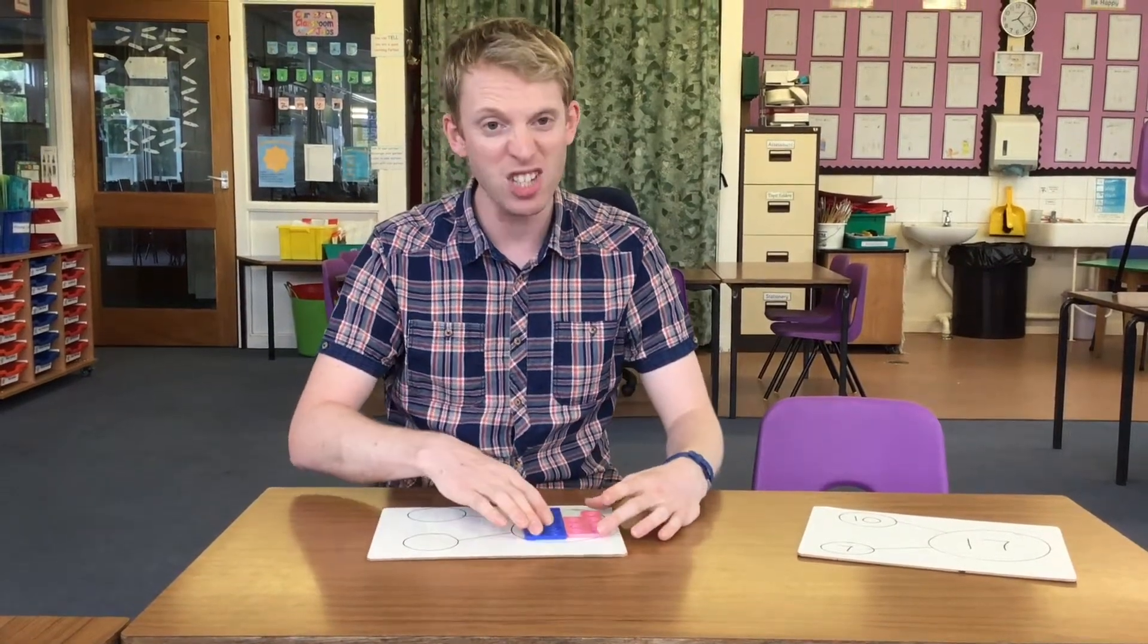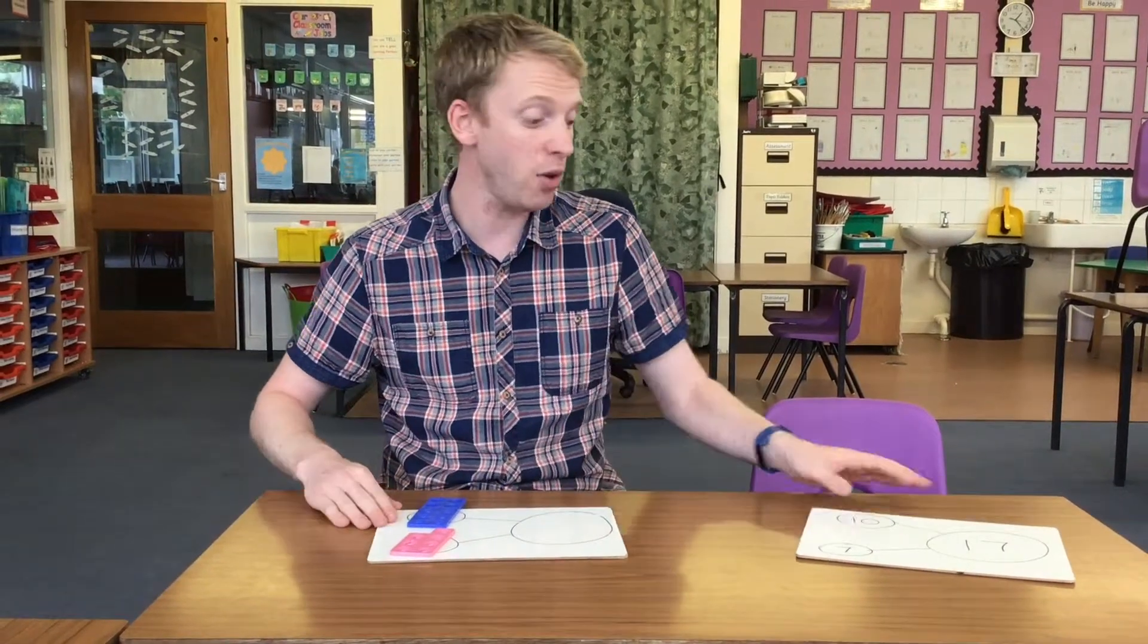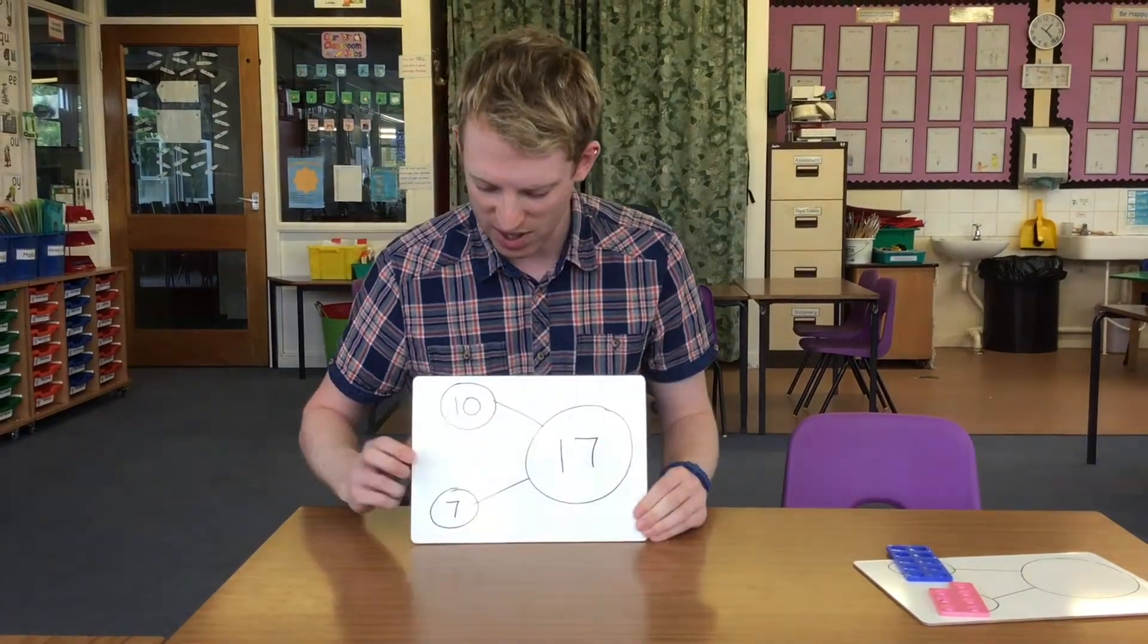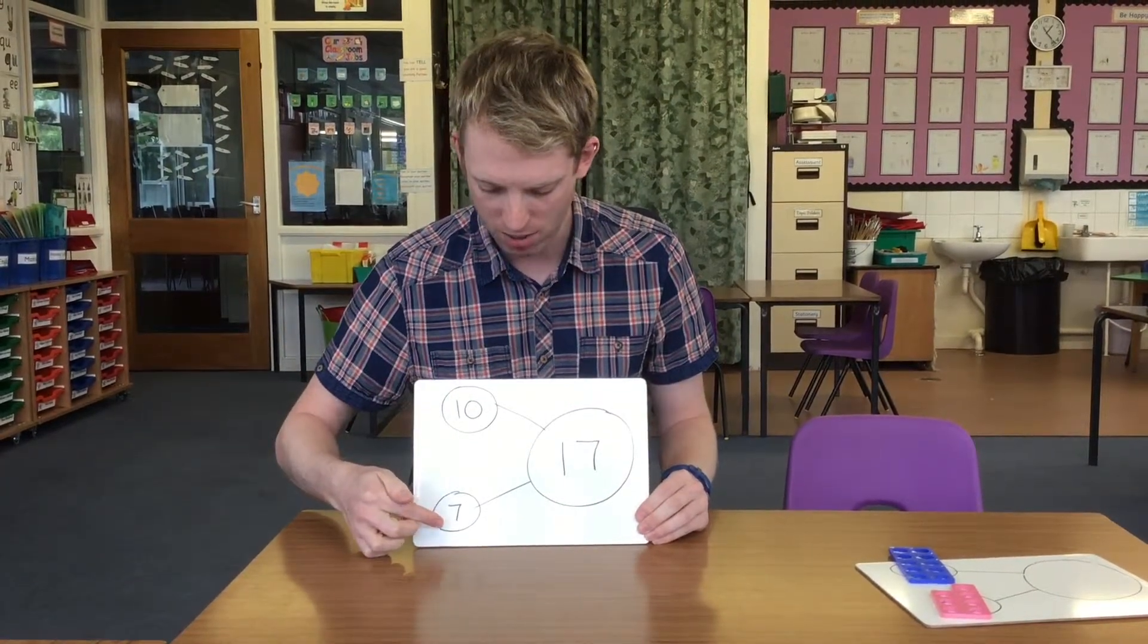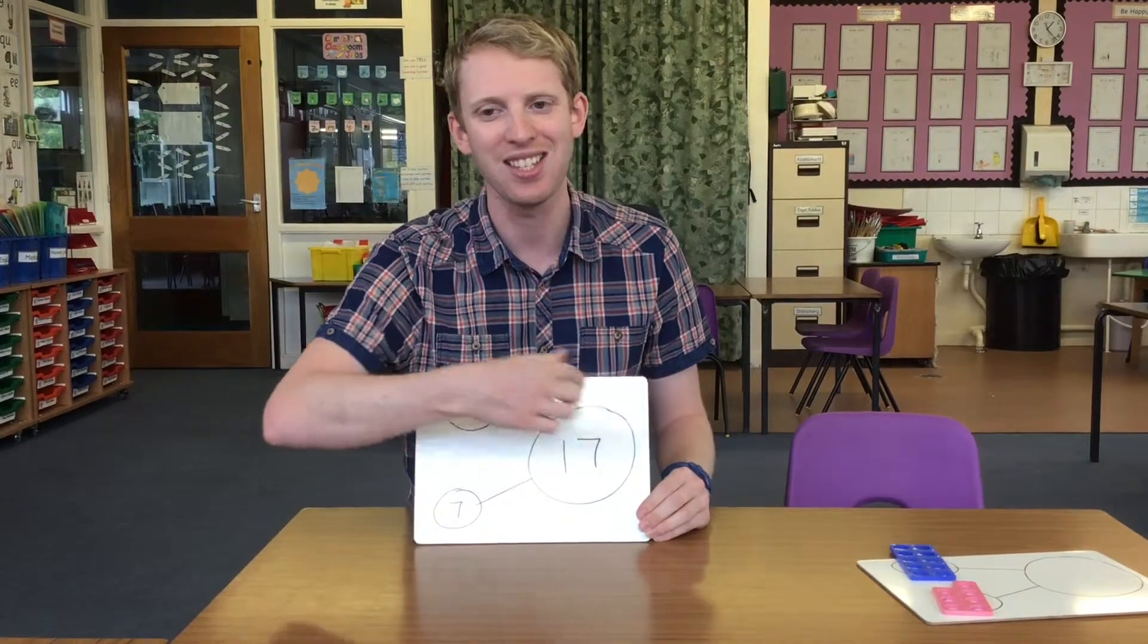And similarly we can partition it back out where we put our 10 and our 7. Once they've had a go at trying it, then we get to write it down as well. So you can see we've got our 10 part, our 7 part, and our 17 is the whole.